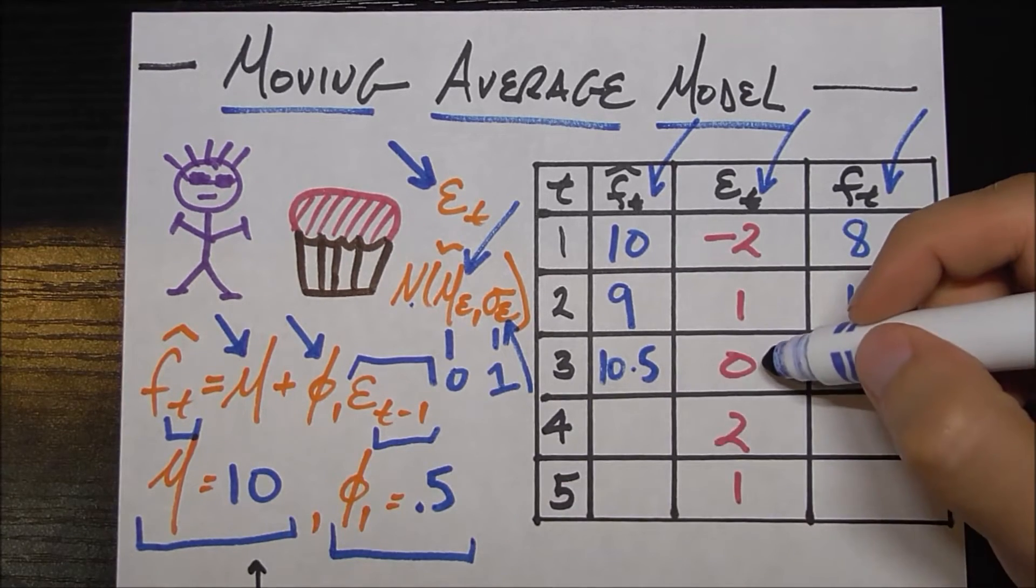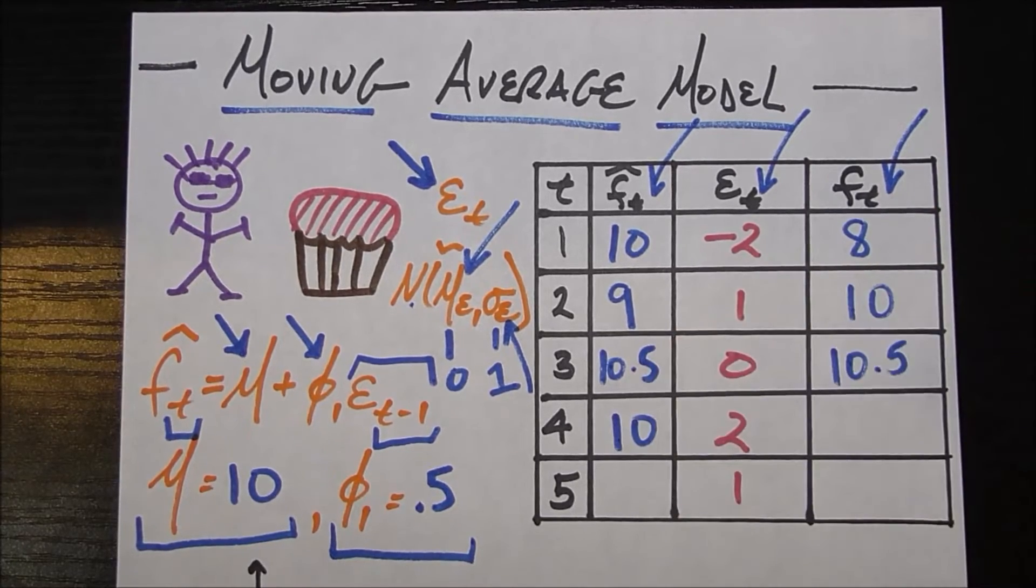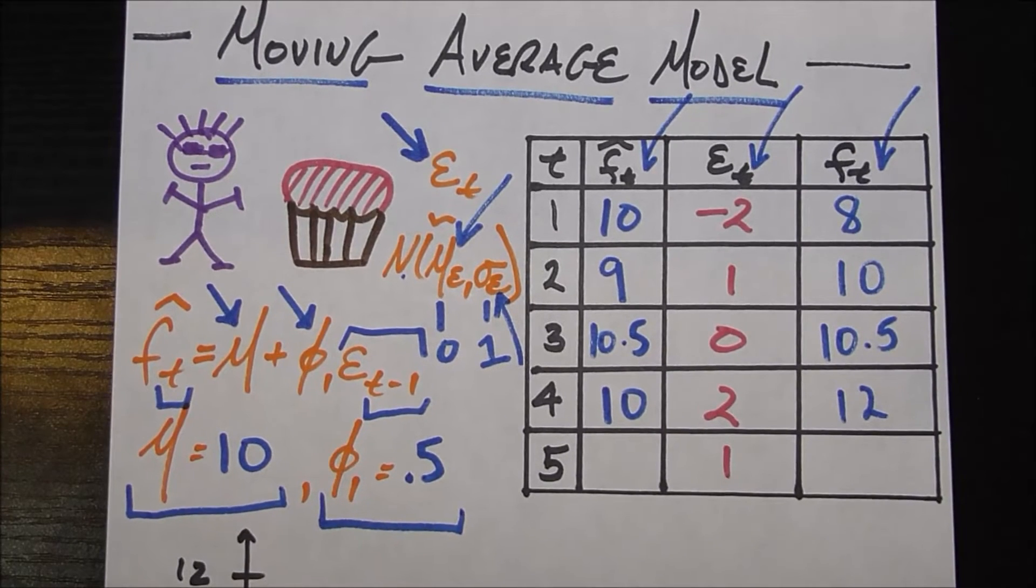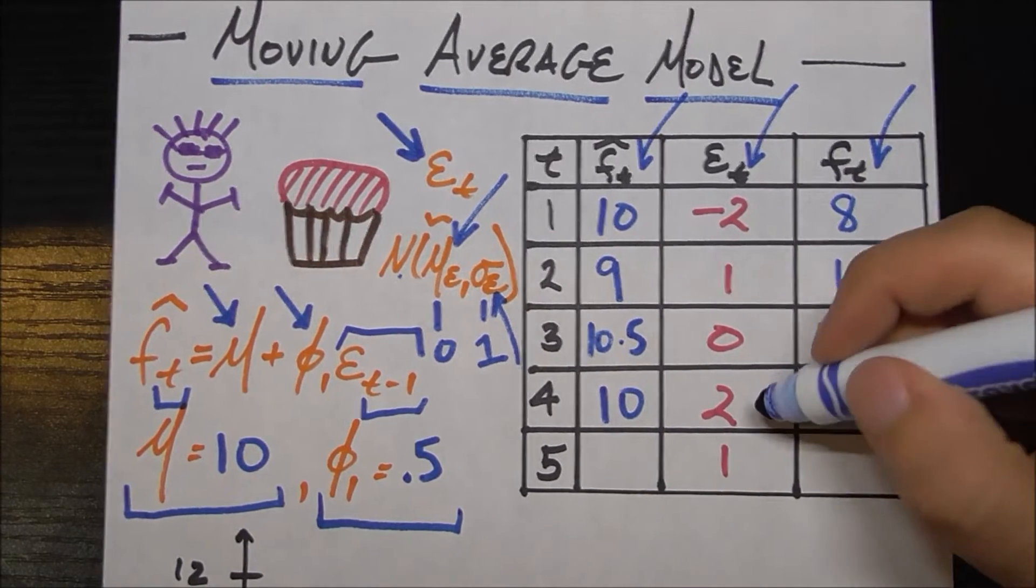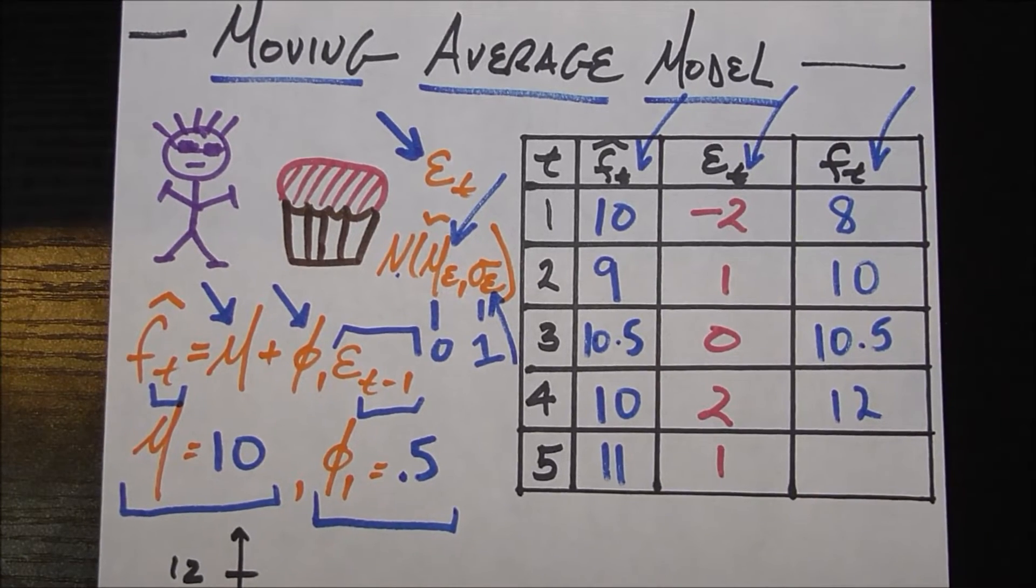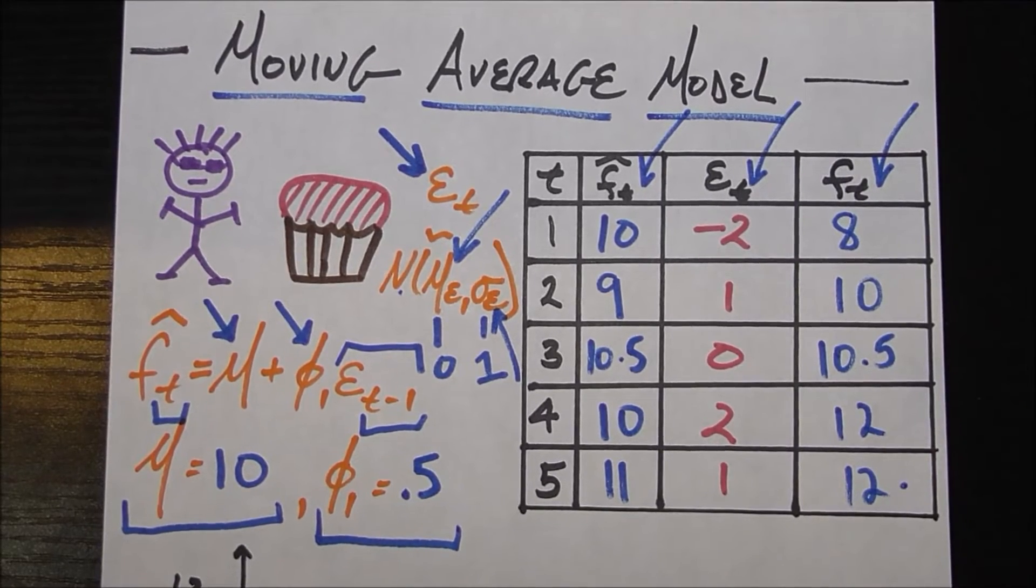So the next month you say, I'm going to bring 10 plus the error from last month, plus phi times the error from last month, which is zero. So that's going to be 10. Professor said he should have brought two more. Should have brought 12. Now in the last month we have on file here, you're going to bring your 10 plus half of two, which is 11. Of course, the professor being crazy says you should have brought one more. You should have brought 12.